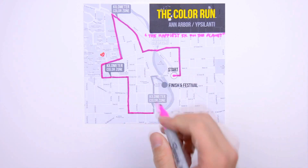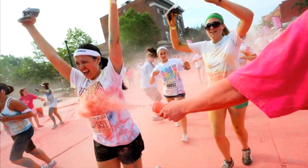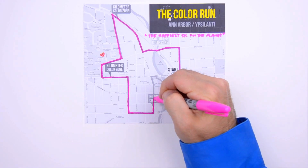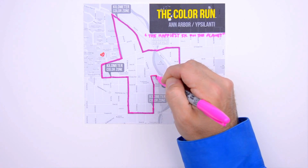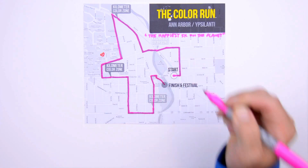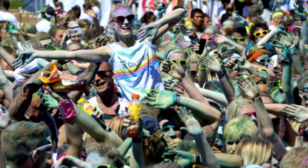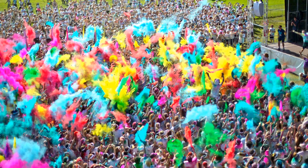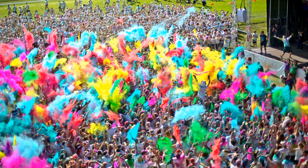Runners turn north off of Michigan Ave, hit their last kilometer color zone, then proceed for several blocks before their final turn, which leads them down to a riverside park. Here, instead of a fifth kilometer color zone, runners are treated to a massive dance party where colored cornstarch is peppered on them like confetti. And that is the Color Run.